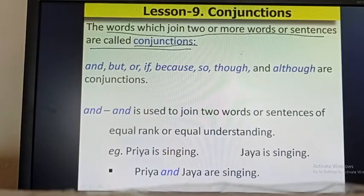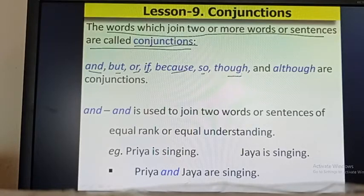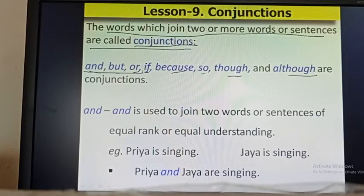So which are the conjunctions? Let us learn. And, but, or, if, because, so, although, though — these are the conjunctions. In your book, only three conjunctions are given: and, but, or. These three only are given.